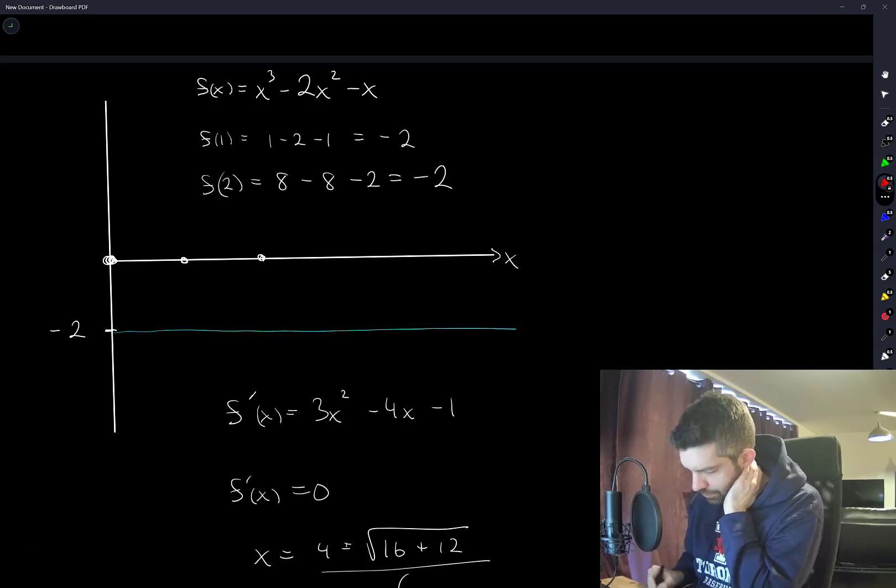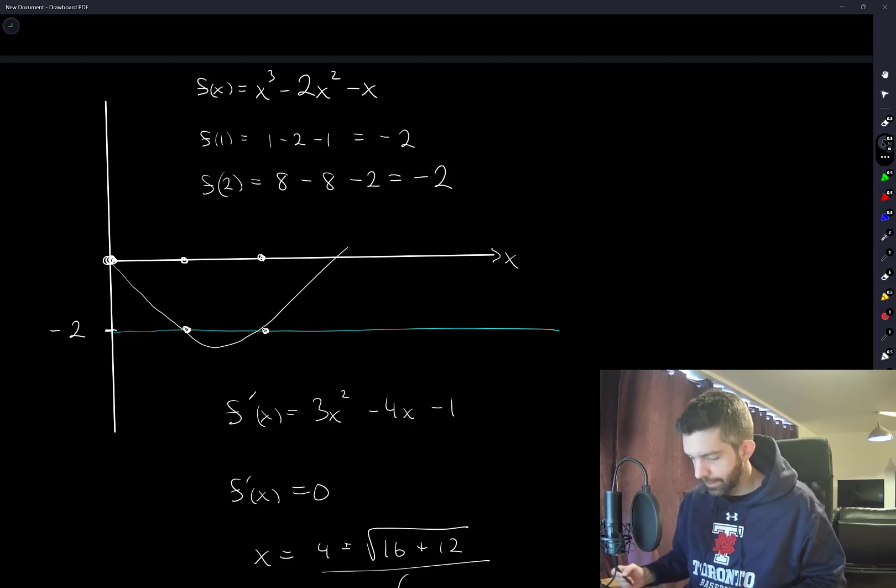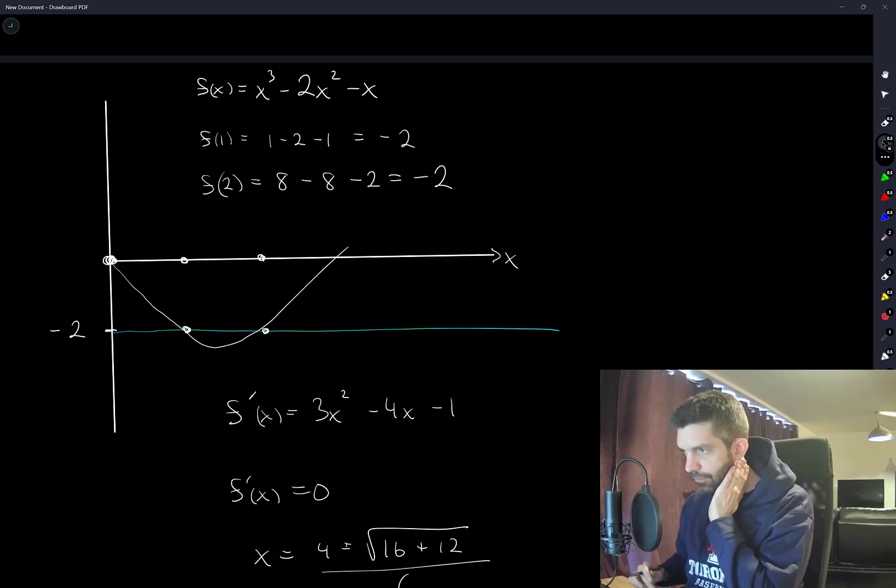When x is equal to 1 or 2, the function is equal to negative 2. And I mean, it's continuous, it's a polynomial. So it has to look like that. So the answer is 2.